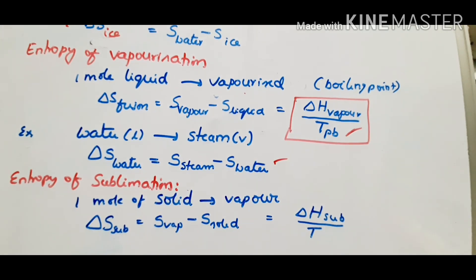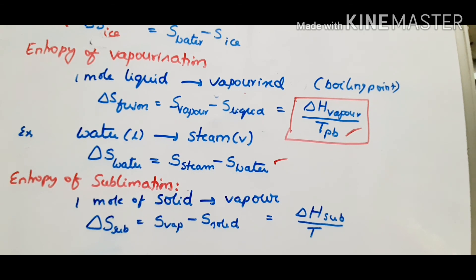Entropy of sublimation: sublimation is when any solid goes directly to the vapor state without passing through an intermediate liquid stage. For example, ice or any solid substance going directly to vapor — the intermediate liquid stage is skipped. This direct solid-to-vapor conversion is sublimation.